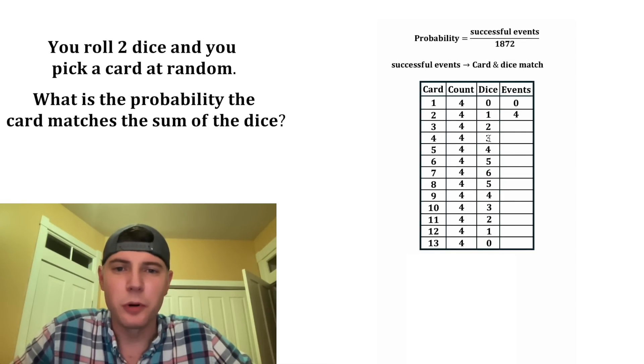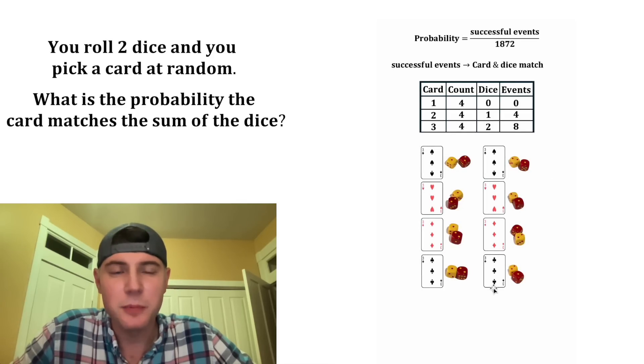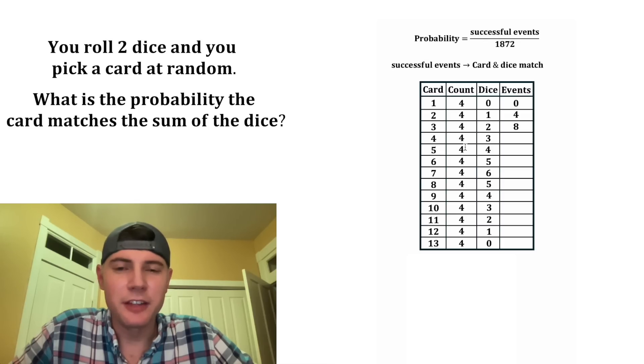And then for the 3 card, we'd multiply 4 times 2 to give us 8. I can show you those too. These are the 8 possible successful scenarios for the 3 card. You have the spades, hearts, diamonds, and clubs for when the yellow is 1 and the red is 2. Or you have spades, hearts, diamonds, and clubs when the yellow is 2 and the red is 1. So that's why there's 8 successful events for 3. And then we can keep going down the table.